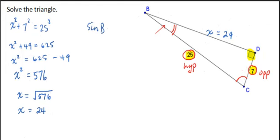Sine of angle B is therefore equal to opposite over hypotenuse, which is equal to 7 over 25, which means that B is equal to the inverse sine of 7 over 25.